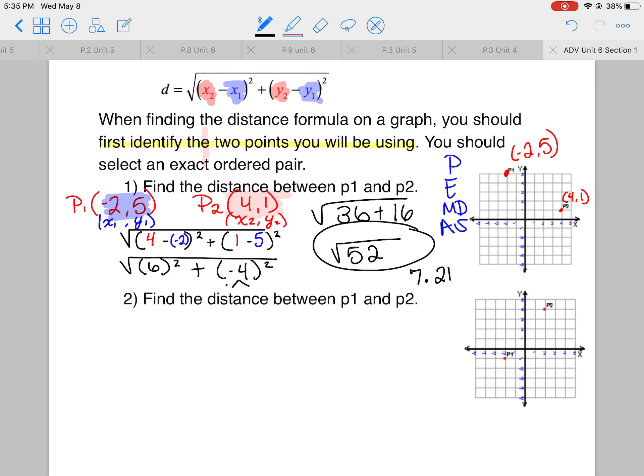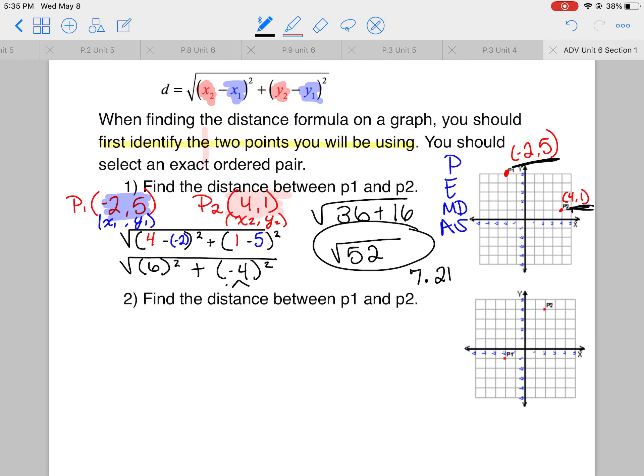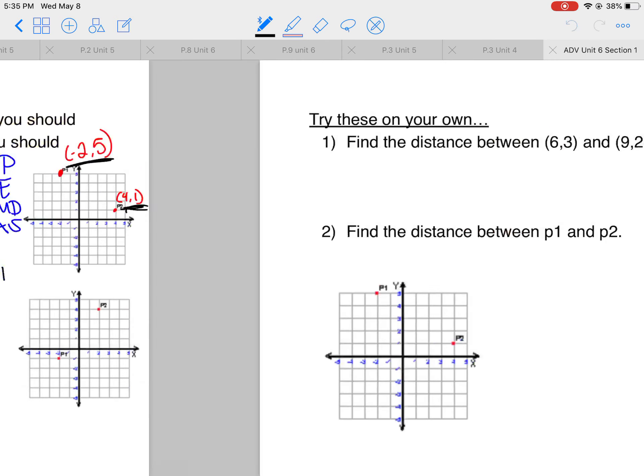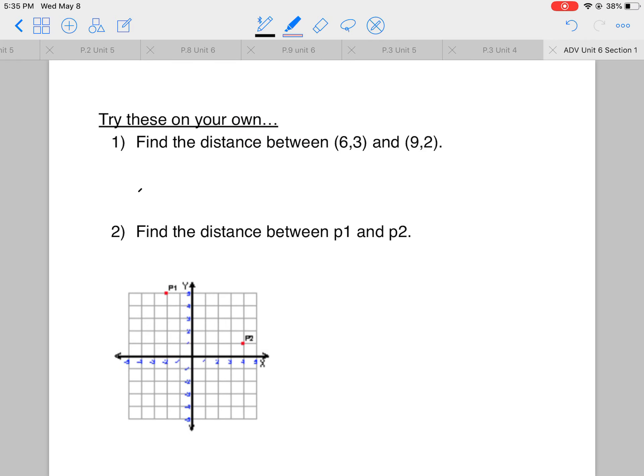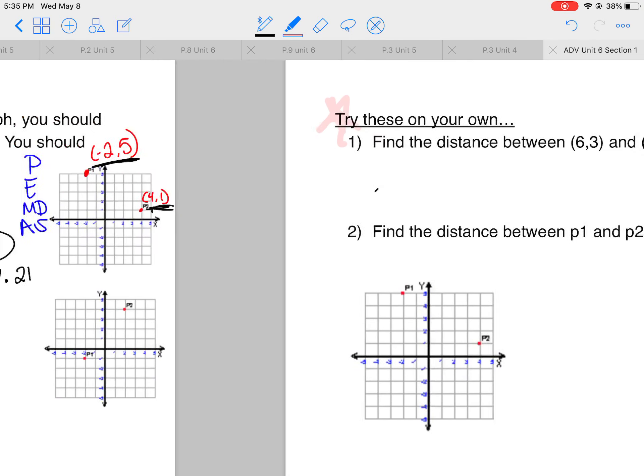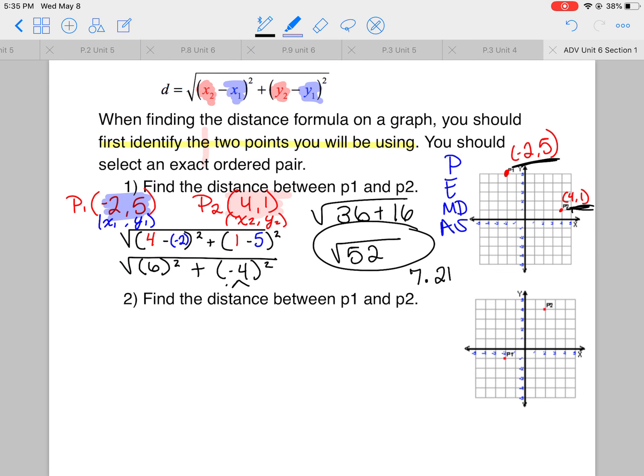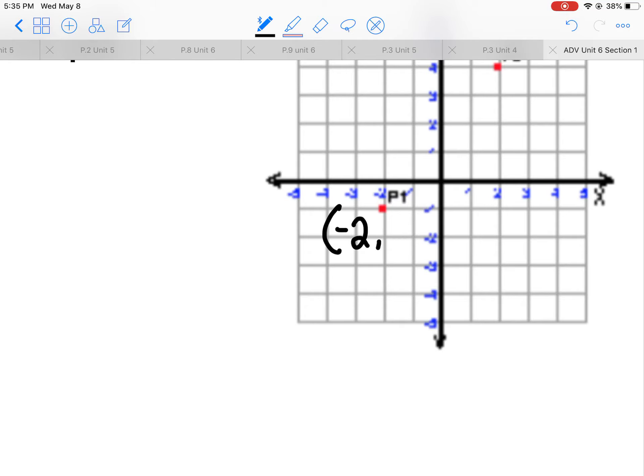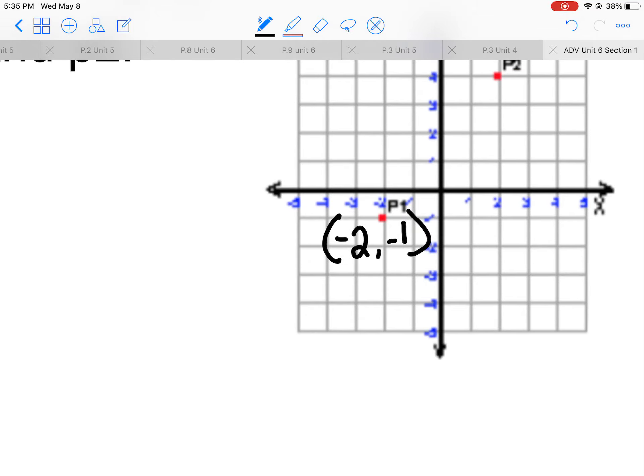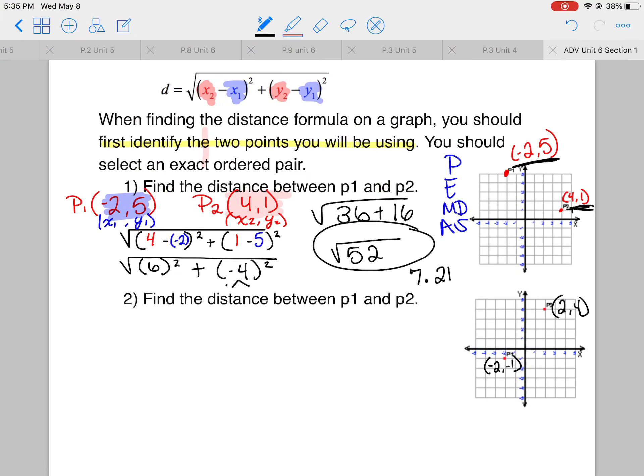The only difference between graphing is you have to identify the points here. They don't give them to you. The rest of it is the same. Now, make sure you do the you try on your own. And here is the same exact as above. So, your points are going to be P1 is negative 2, negative 1. And point 2 is 2, 4. So, there you go. You may now go ahead and continue.